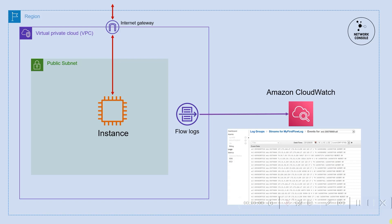One more important thing: in this lab I am not going to show you how to install instances and how to configure the internet gateway and default routing tables, because in earlier labs we already covered all those things. If you would like to know how to configure an instance, internet gateway, and routing table modifications, you can check my previous videos. In this lab I am going to focus only on VPC flow logs — how to enable them, how to send them to CloudWatch, and how to read them.